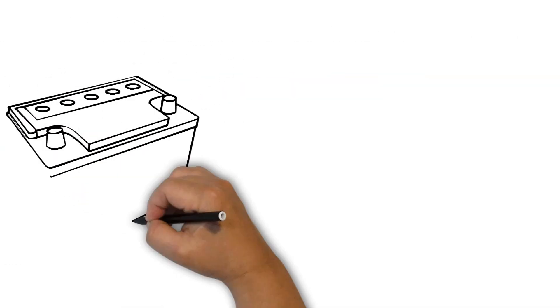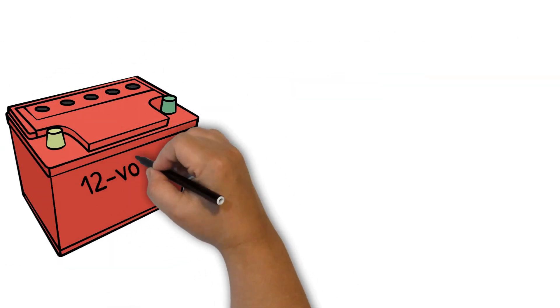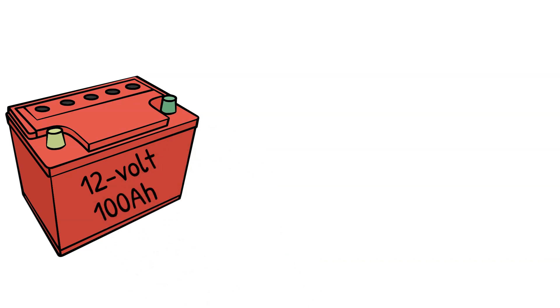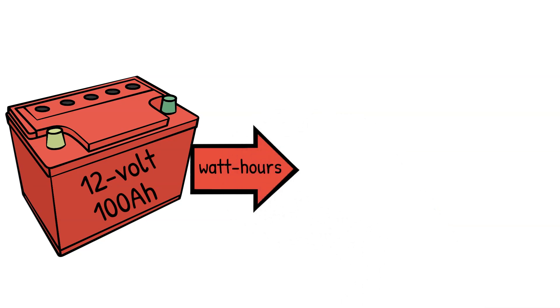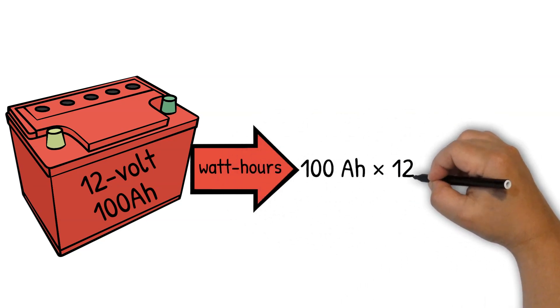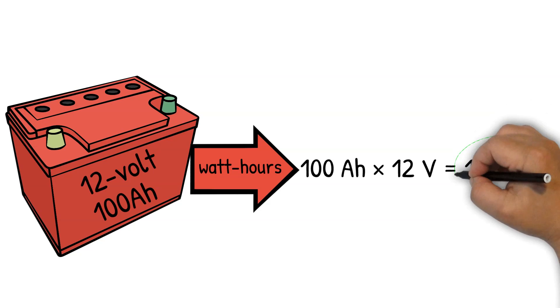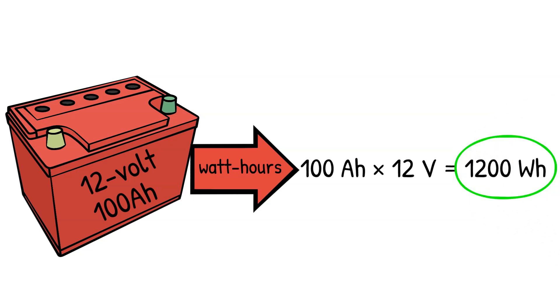First, let's talk about the battery. We'll use a 12-volt battery with a capacity of 100 ampere hours for our calculations. To convert this into watt-hours, we multiply the ampere hours by the voltage. So, our battery has a total capacity of 1200 watt-hours.